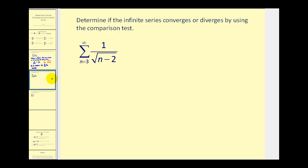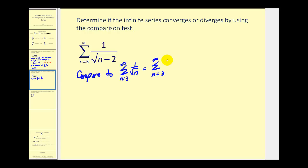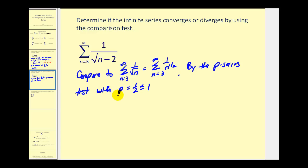Let's take a look at another one. Here we have the summation of one over the square root of n minus two. Looking at this, it should remind us of the summation of one over the square root of n. So let's try comparing it to that series. We can rewrite this as one over n to the one half power. Based upon the form of this infinite series, we can apply the p-series test where p equals one half. Therefore, we know that this series diverges — by the p-series test with p equal to one half, which is less than or equal to one.